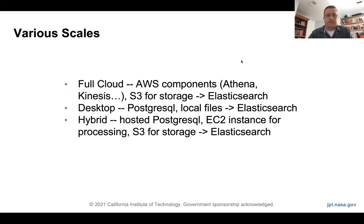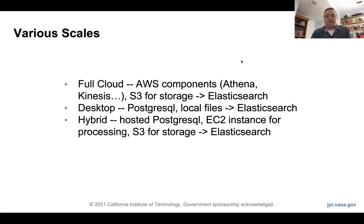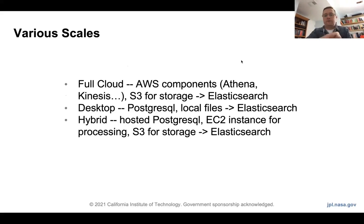Now I'll talk about the observatory at two scales. We initially started full cloud with AWS components — Athena, Kinesis, and S3 for storage. We were running tools against the files, putting the metadata into Athena, doing a big join in Athena, and making file features searchable in Elasticsearch. Since then, we've discovered a pretty important use case for desktop use of the observatory — maybe a million files on a single server where you don't need the full AWS, Kinesis, and Athena stack. So we've started developing a file observatory in a box that runs on the desktop, made somewhat hybrid so you could run it on an EC2 instance and pull from S3 if you want.